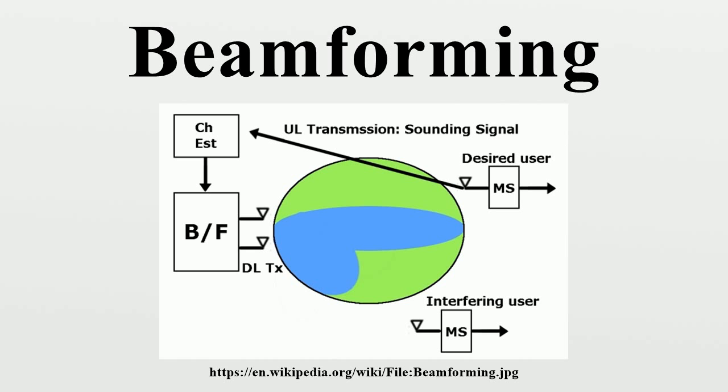Beamforming techniques: To change the directionality of the array when transmitting, a beamformer controls the phase and relative amplitude of the signal at each transmitter, in order to create a pattern of constructive and destructive interference in the wavefront.